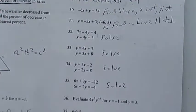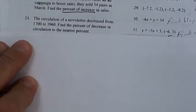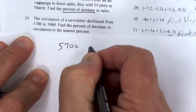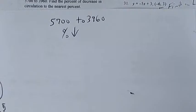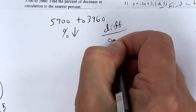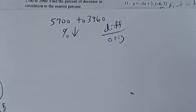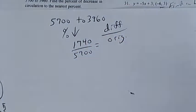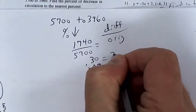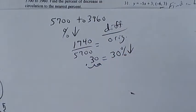Number 24: the circulation of a newspaper decreased from 5,700 to 3,960 — find the percent decrease. Difference divided by original: 5,700 minus 3,960 is 1,740. Divide by 5,700 and you get 0.30 — a 30% decrease.